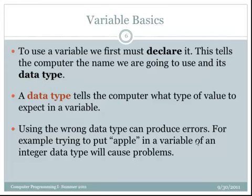The data type tells the computer what type of value to expect in that variable. So when it creates that space in memory, it knows what type of space it is. If we actually enter in a data type and then we put in a different value, then we can get errors in our code and in our compilation.